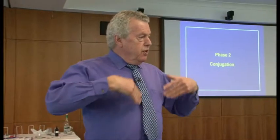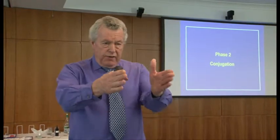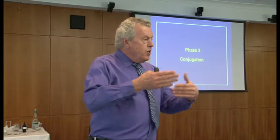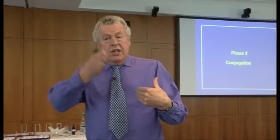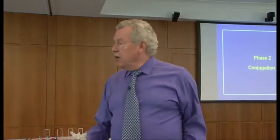Now, phase two. This is getting rid of the hydroxylated derivatives. Phase one was about adding an OH to make it more water soluble. Now we've got to conjugate it or link it to something else to be able to pass it out through the liver, into the bile, or through the urine.